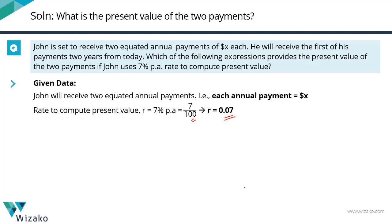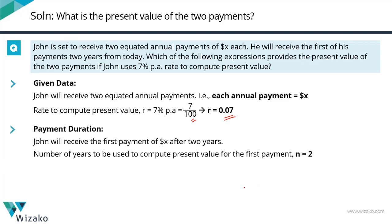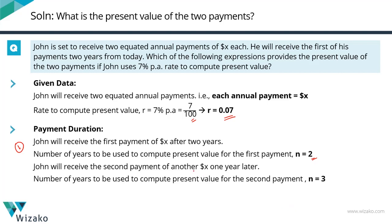Now, the first of the payments he is going to receive is for X dollars, and he is going to receive it two years from now. So n, the number of years used to compute the present value for the first payment, is equal to 2. The second payment he is going to receive is one year after that point in time, also for X dollars, so for the second payment n is equal to 3.